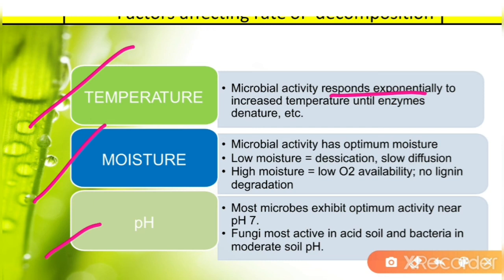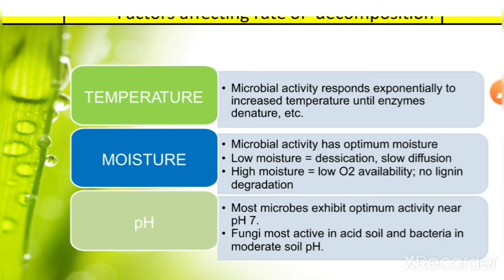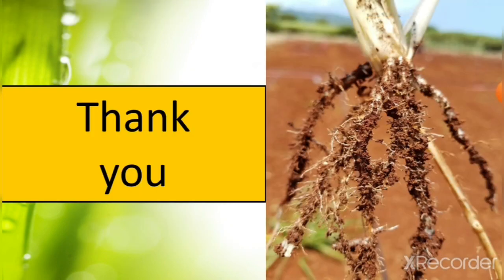Third, pH: microorganisms require optimum pH for their growth — around pH 7 for bacteria, and around pH 5 for fungi. At optimum pH, their enzymes will be active and they will carry out decomposition of organic matter. So this is all about decomposition of organic matter, where microorganisms and soil organic matter play essential roles.